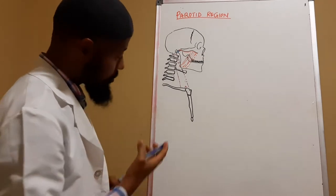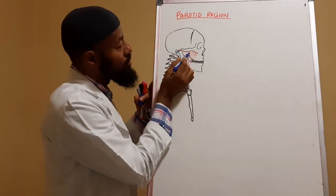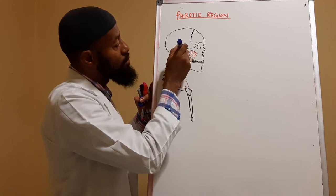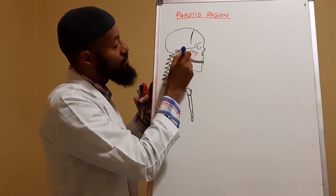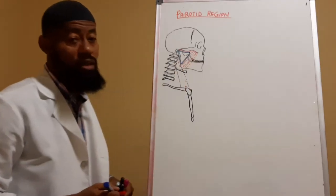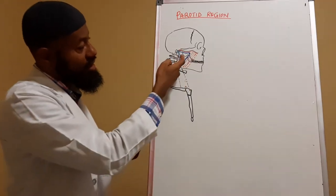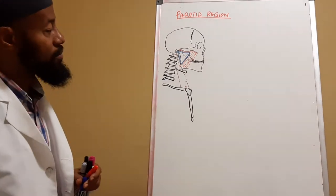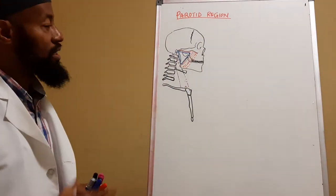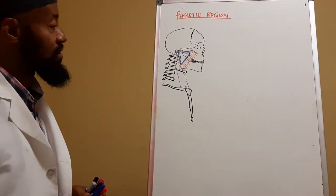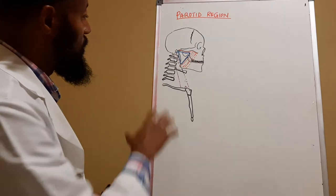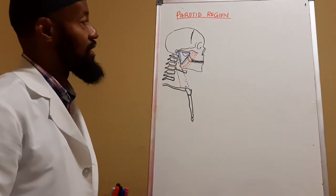The lateral boundary is the skin surrounding that region. So we can beautifully outline this region: superior margin, posterior margin, inferior margin, and the anterior margin. The medial margin is the body or the ramus of the mandible, and the superficial covering — the lateral boundary — is the skin and subcutaneous tissue that covers the region, and we would have our gland right there.